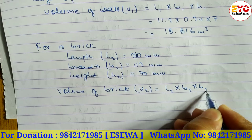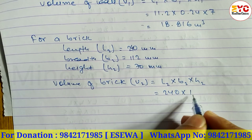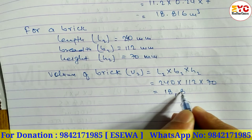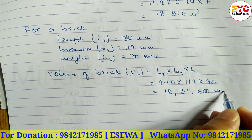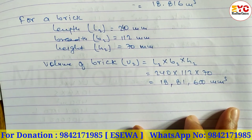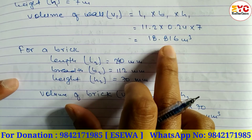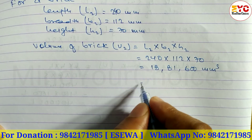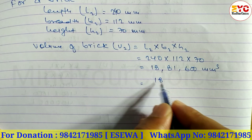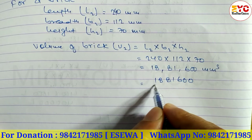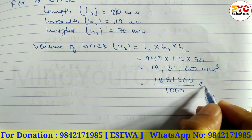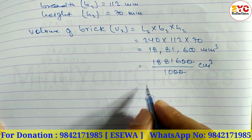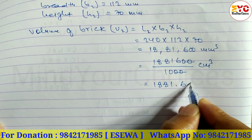So L2 × B2 × H2 equals 240 × 112 × 70, which gives 1,881,600 mm³. We need to convert this to cubic meters. Dividing by 1000 converts mm³ to cm³, giving 1881.6 cm³.